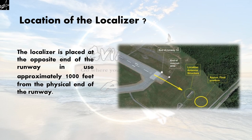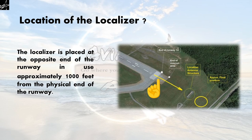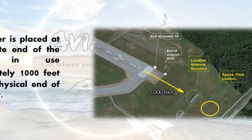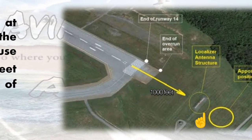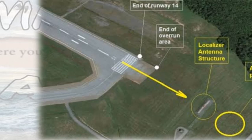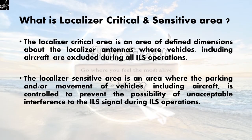Now let's understand where the localizer is placed. The localizer is placed at the opposite end of the runway in use, approximately 1000 feet from the physical end of the runway. As shown in the picture, if runway 14 is in use, the localizer antenna array is placed 1000 feet from the physical end of runway 14.